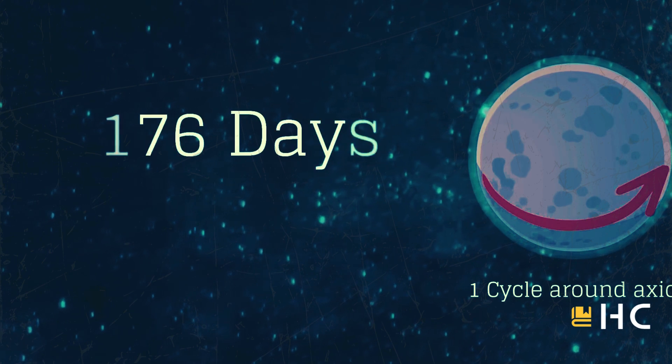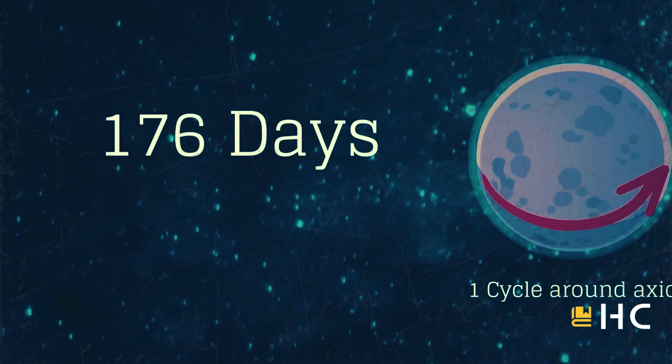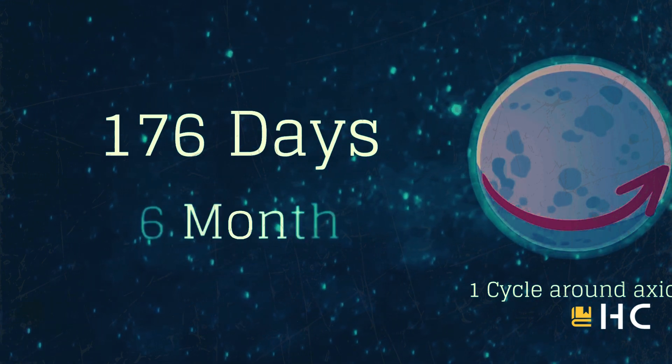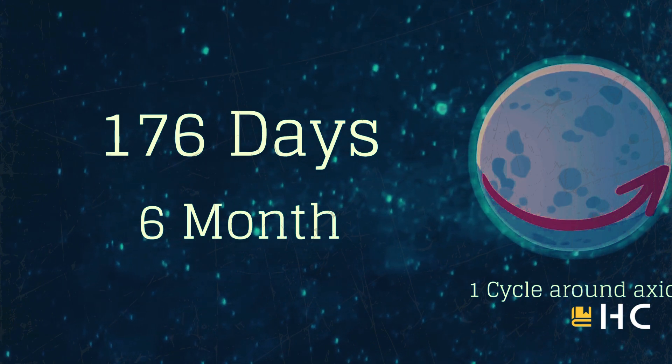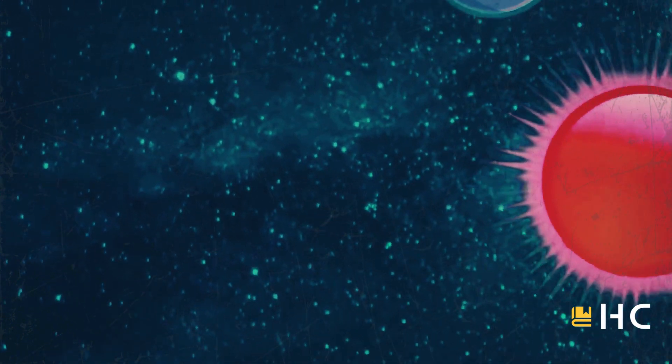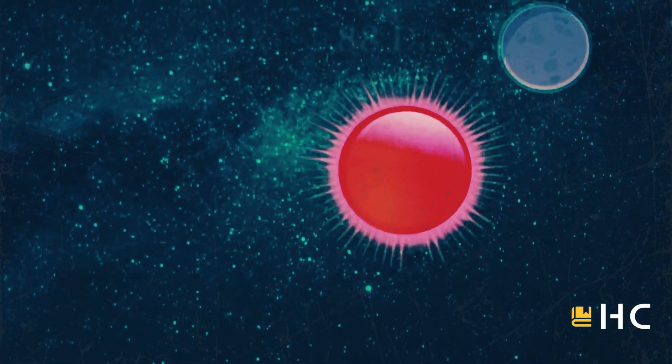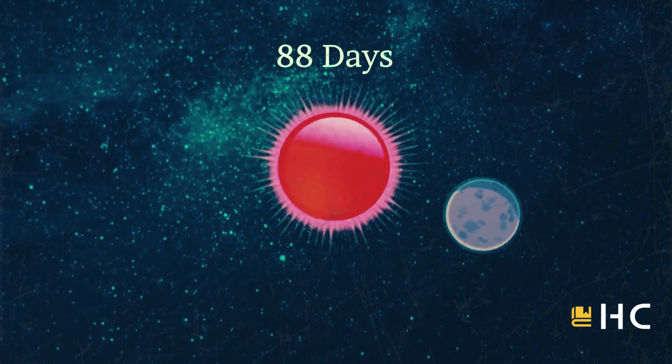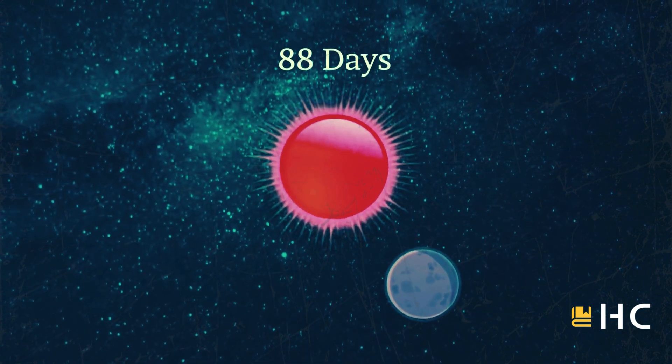Mercury completes a round on its axis in 176 days of the Earth. It takes about six months of the Earth. The same Mercury completes its revolution of the sun only in 88 days. Thus a day on Mercury is over two years of the Earth.